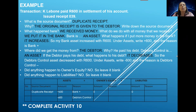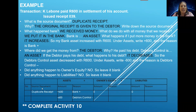So what is the source document? The duplicate receipt. Why is it the duplicate receipt? Because the original one is given to the debtor. So here in your answer sheet, by source document, you write duplicate receipt.